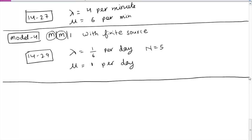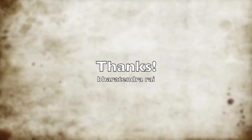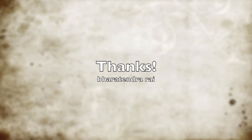The situations described in these four models may not always apply. You could have a very complex situation that is difficult to model using standard waiting line models. One way to deal with such situations is simulation — we simulate the conditions and then evaluate the performance. Simulation is the topic of the next chapter.